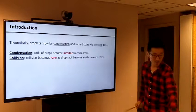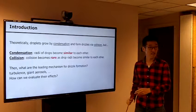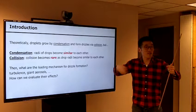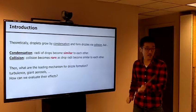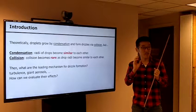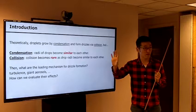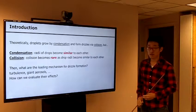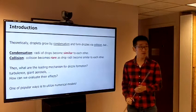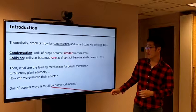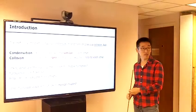So the question is: what are the leading mechanisms for rain formation? Somebody says it's turbulence — turbulence induces collisions between drops with similar radii. Somebody says it's giant CCN, because initially very large aerosol can activate with very large droplets. But how can we evaluate their effects? It's very hard to examine this question using observations only. So one popular way is to utilize numerical models — that's why I'm talking about numerical cloud models in this presentation.